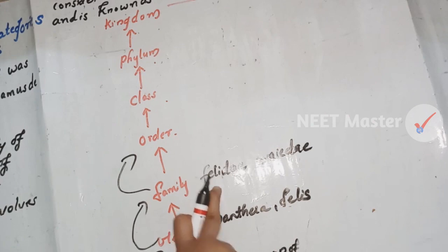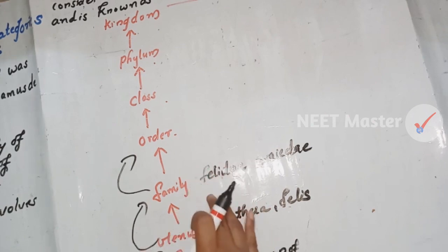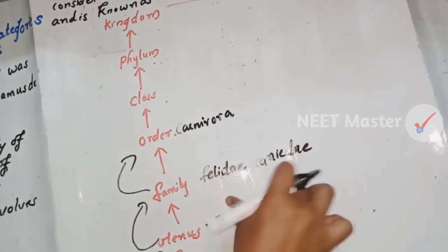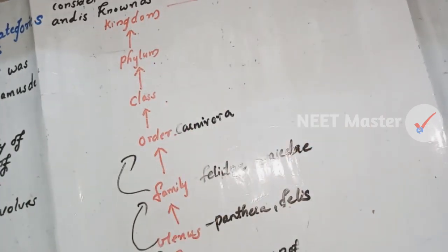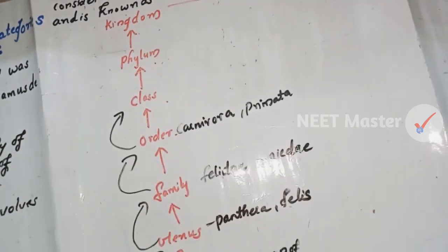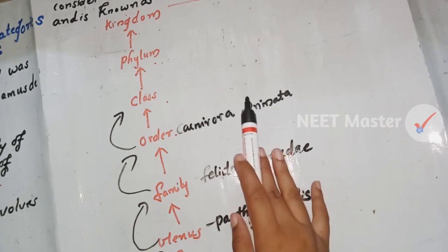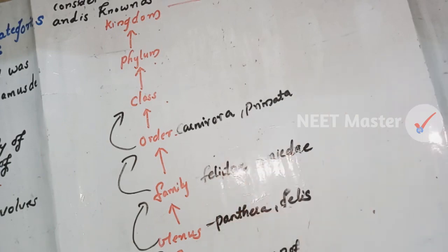Order is a group of related families. For example, the order Carnivora includes the family Felidae and the family Canidae. When we come to Class, the order Primates belongs to the class Mammalia. Primates include monkeys, apes, gorillas, gibbons, and humans, all sharing common characteristics.